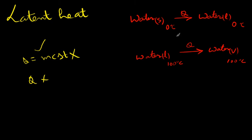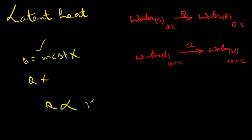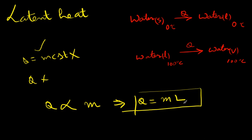We call this latent heat. For example, if you take 1 kg of ice and give some heat, you get 1 kg of water in liquid form. If you increase the ice to 2 kg, you have to give more heat to convert it. This heat is not helping the substance increase temperature, so we call it latent heat. Q should be proportional to mass, so Q = mL, where L is the latent heat constant.